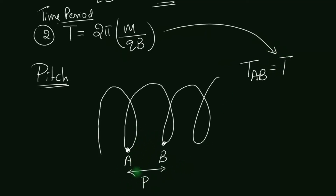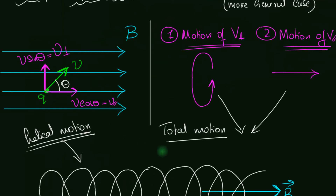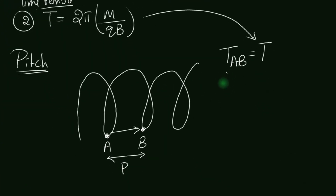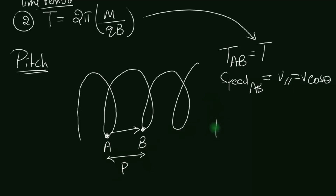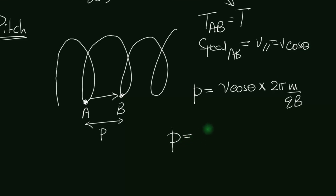The velocity from A to B is the parallel component — v cos theta. So the pitch is distance = speed × time = v cos theta × T = v cos theta × 2πm/qB. Therefore, pitch = 2πmV cos theta / qB. None of this needs to be memorized — it can all be derived intuitively from basic kinematics and laws of motion.